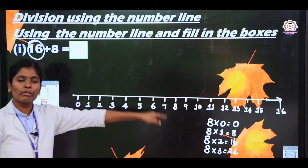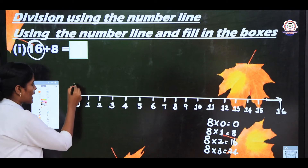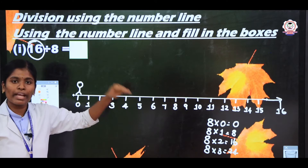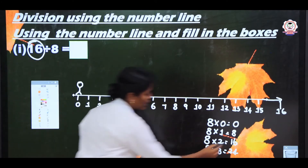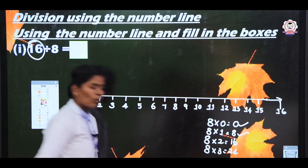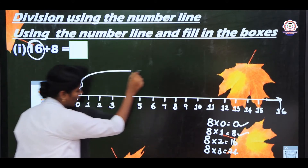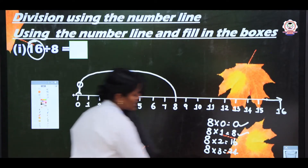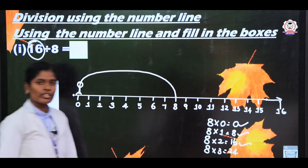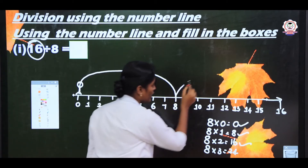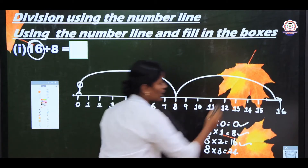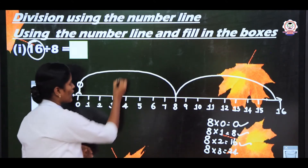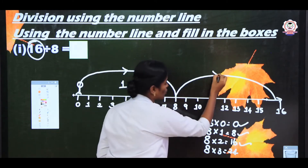Now start from 8 zeros are 0 — stand at 0 on the number line. Then jump: 8 ones are 8 — jump to 8. Next, 8 twos are 16 — we have reached 16, which is our question. Count how many times you jumped: one time and then two times.